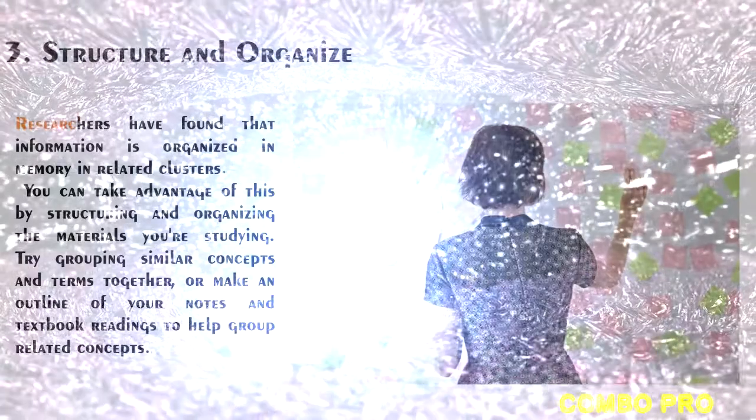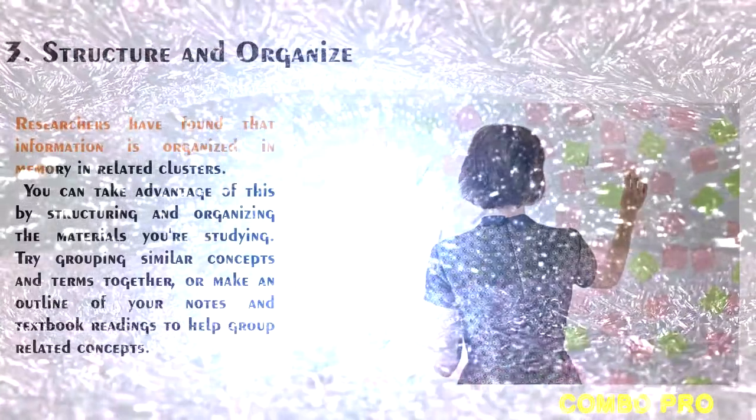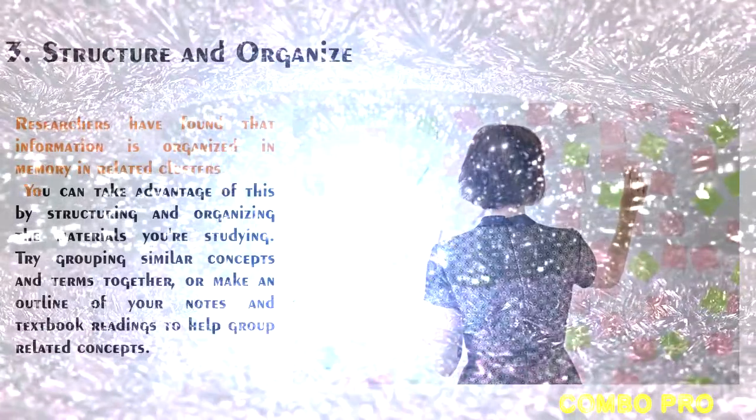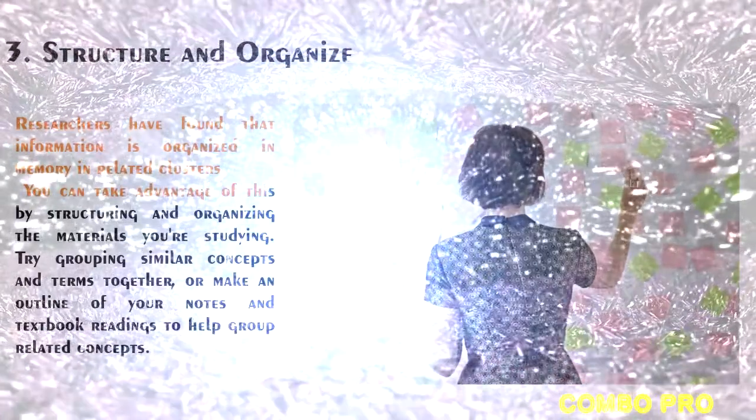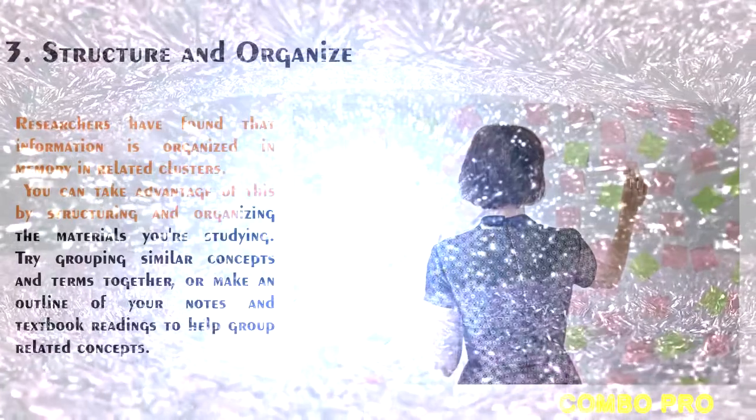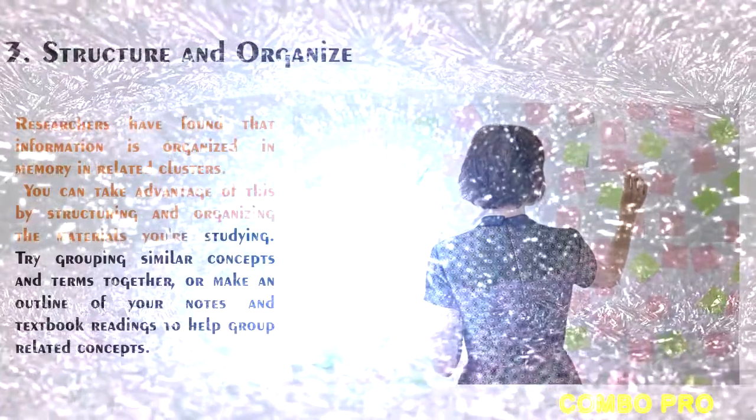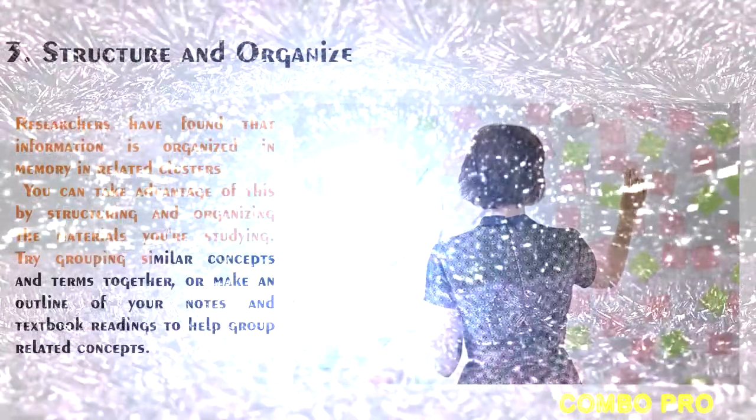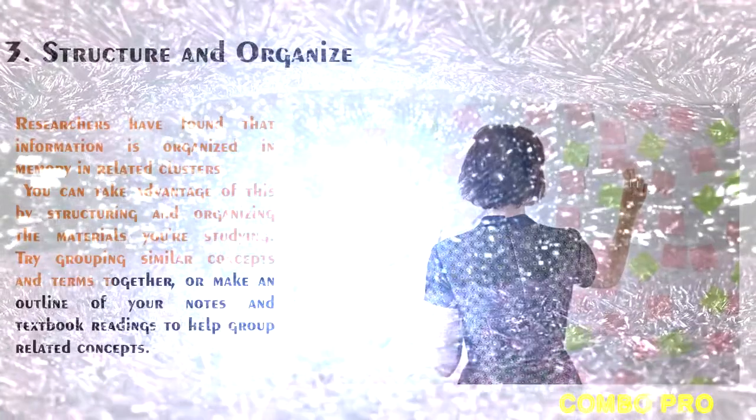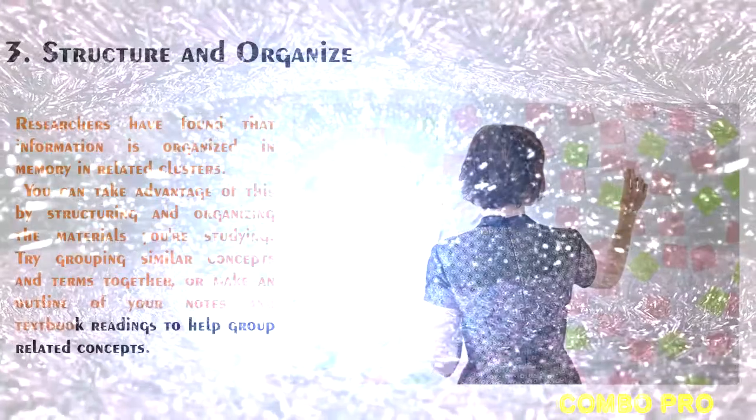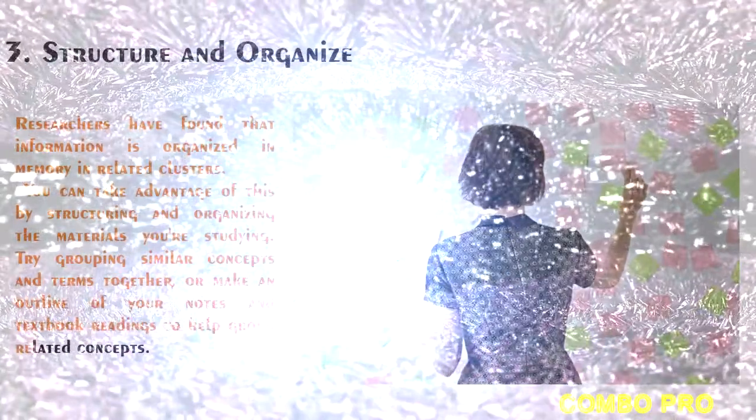The third tip is to structure and organize. Studies have found that information is organized in memory in related clusters. You can take advantage of this by structuring and organizing the materials you're studying. Try grouping similar concepts and terms together, or make an outline of your notes and textbook readings to help group related concepts.